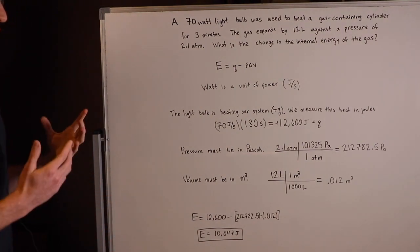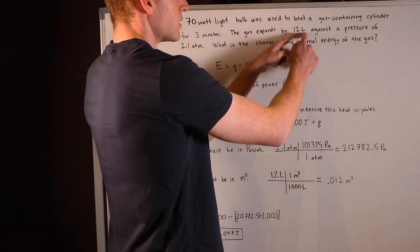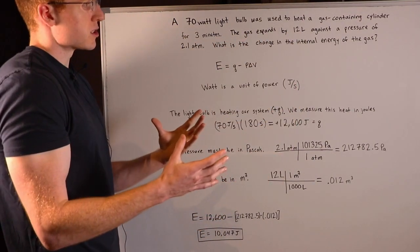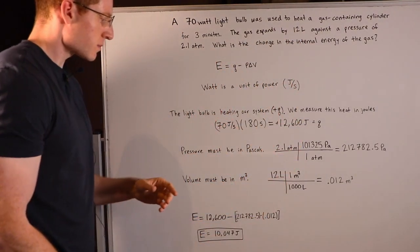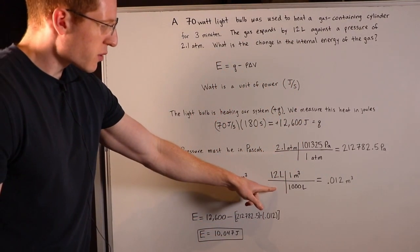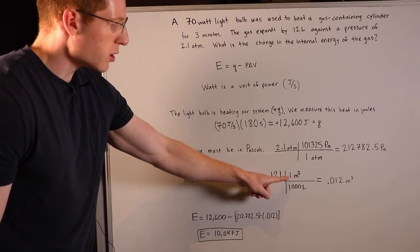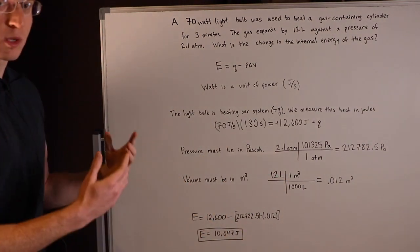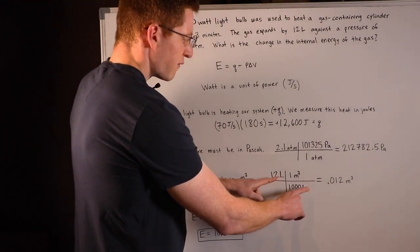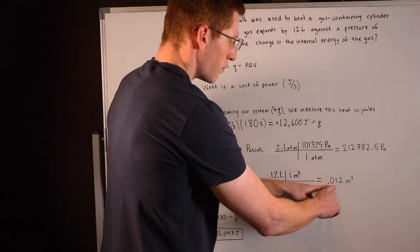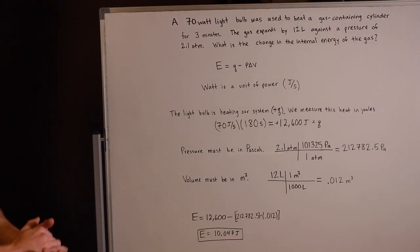Finally, I have to make sure my volume is in cubic meters. They said the gas expands by 12 liters, right? So that's a volume change. I know that's my delta V, but I need that in cubic meters. Well, I know the conversion factor is 1,000 liters per one cubic meter, or one cubic meter per 1,000 liters. And when I set the conversion up like this, the liters cancel out, and I find that 12 liters is equal to 0.012 cubic meters goes down by a factor of 1,000.